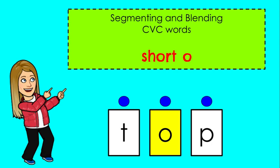Today we're going to be segmenting and blending CVC words, words that have a consonant at the beginning, a short vowel sound in the middle, and another consonant at the end.